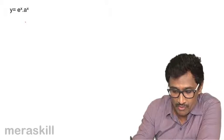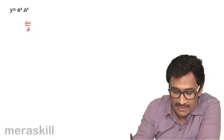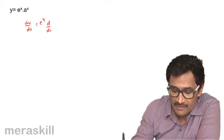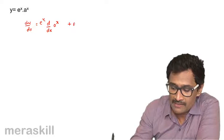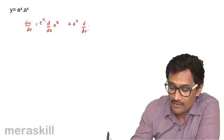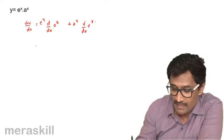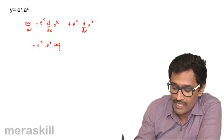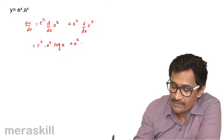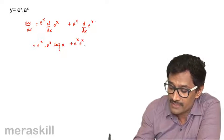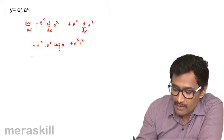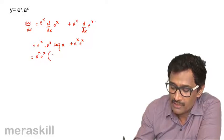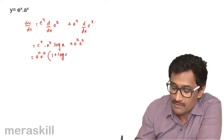Let's take the first example. dy/dx will be the first function e^x into d/dx of a^x, plus a^x into d/dx of e^x. This gives e^x · (a^x · log a) + a^x · e^x. We can take a^x · e^x as a common factor and get log a + 1, or 1 + log a.